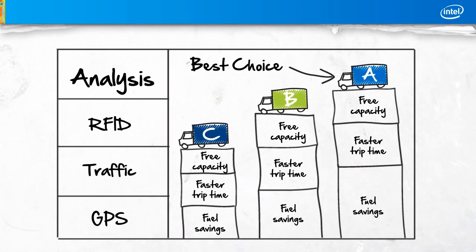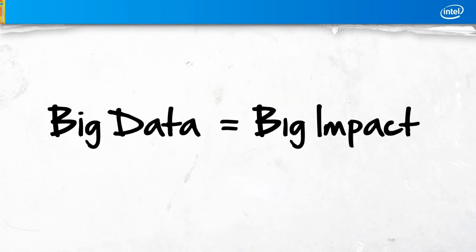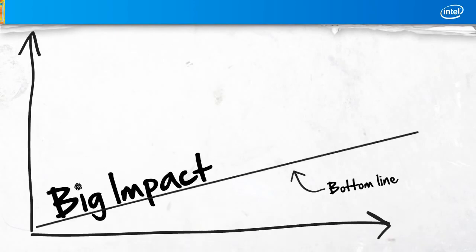But the only way to arrive at the optimal decision is to analyze multiple big data sources in real-time. And that's just one quick example of how big data can make a big impact on a company's bottom line.